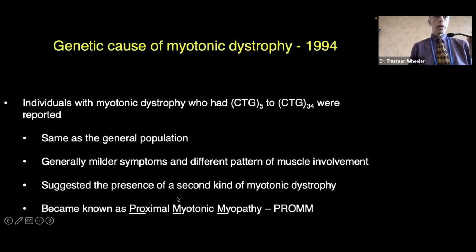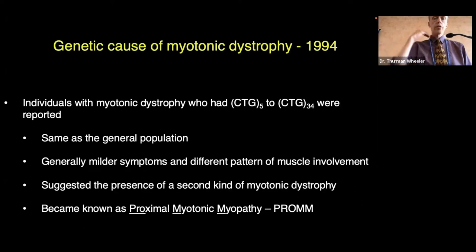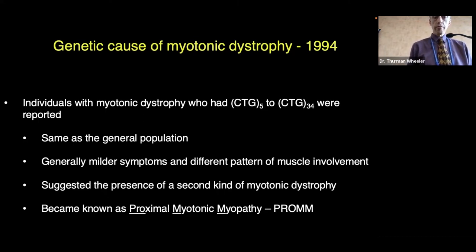Within a couple of years, clinicians noticed individuals who clinically had myotonic dystrophy symptoms, but whose DMPK gene contained between 5 and 34 repeats — the same as the general population. These individuals generally had milder symptoms and a different pattern of muscle involvement: the proximal muscles first — axial muscles, neck, back, hips, and shoulders — as opposed to type 1, where hands and feet are affected first. This suggested a second kind, which became known as proximal myotonic myopathy or PROMM, around 1994.